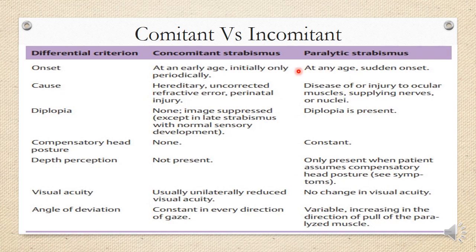Regarding causes, concomitant squint can be hereditary, due to uncorrected refractive error, or perinatal injury. Uncorrected refractive error includes refractive accommodative esotropia and high refractive error — these are all concomitant squints. Paralytic squints are generally caused by disease or injury to the ocular muscles, the nerves supplying innervation to those muscles, or the nuclei from which innervation originates. Hereditary, perinatal injury, and refractive causes are your concomitant squints.